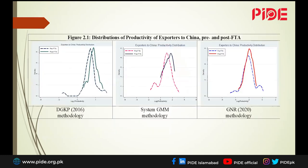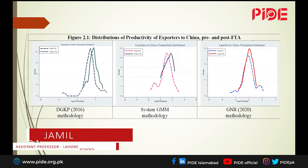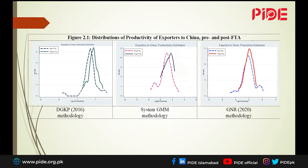Coming on to the results: we've used different and very complex methodologies, but whichever methodology we use with different assumptions, we see that at least graphically, productivity has gone up. The solid line is productivity post-FTA, and the dotted line is productivity pre-FTA. Irrespective of which methodology we use, productivity has gone up.